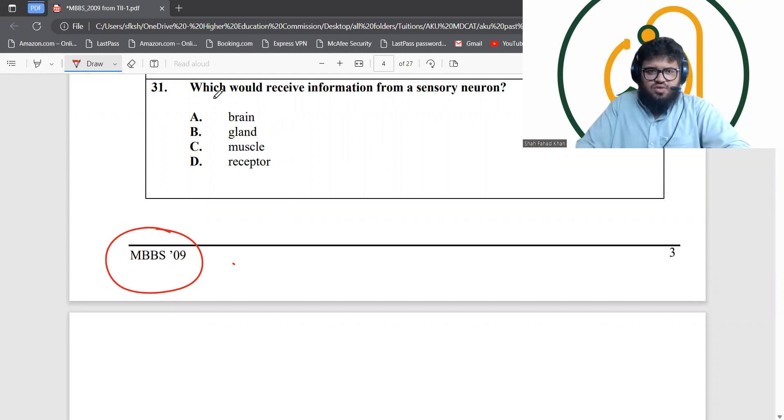Question 31 says which one would receive information from sensory neurons. Sensory neurons do not bring information to the gland, they would bring it to the central nervous system. Central nervous system has two parts, either the brain or the spinal cord. We have brain as one of the options, so brain is correct.